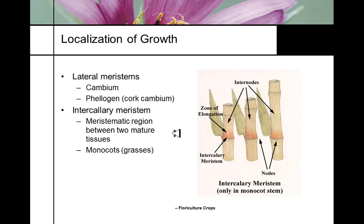Lateral meristems increase in stem thickness — that's what we think of as cambial tissue. The cambium is a lateral meristem, as is the cork phellogen just inside the bark, which is constantly growing. Lateral meristems like the cambium are permanently embryonic. That's why we can do grafting and root cuttings.